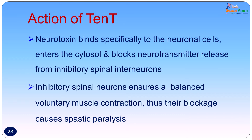When it reaches the cells of the brain and spinal cord, it binds specifically to neuronal cells, enters the cytosol, and blocks neurotransmitter release. Acetylcholine release is responsible for transmission of impulses from the higher motor neurons to the lower motor neurons. This release of acetylcholine is inhibited because the sites are bound by the neurotoxin, and thus the inhibitory control of the spinal interneurons is removed. Inhibitory spinal neurons normally ensure balanced voluntary muscle contraction; their blockage causes spastic paralysis, and the muscle is not able to relax between contractions.